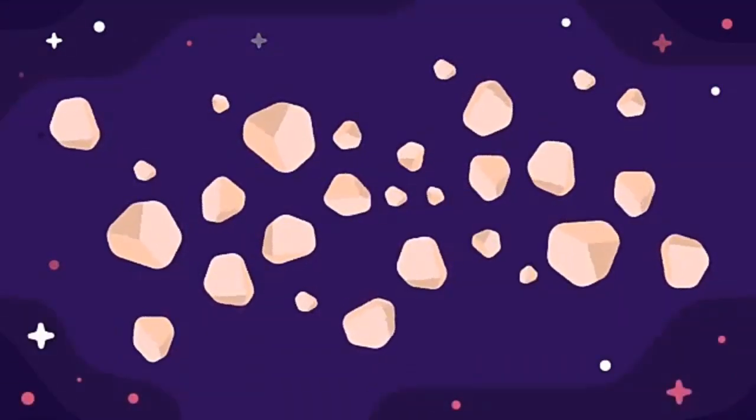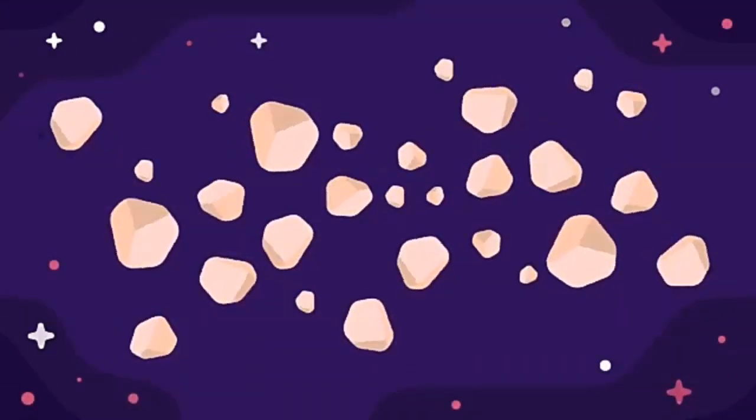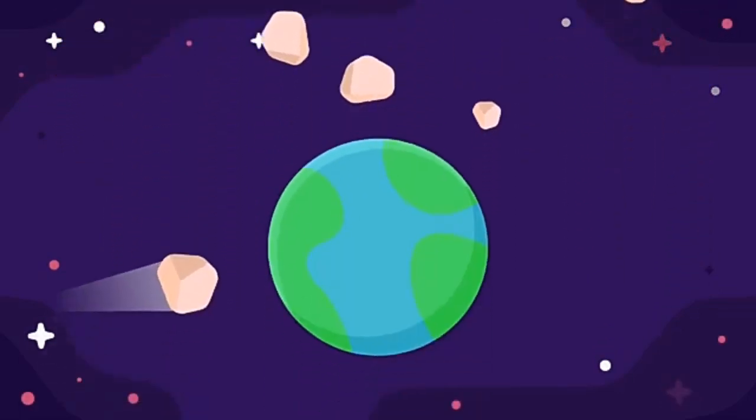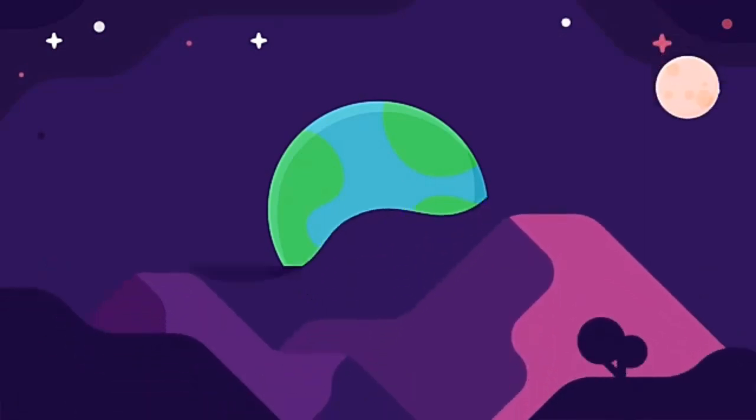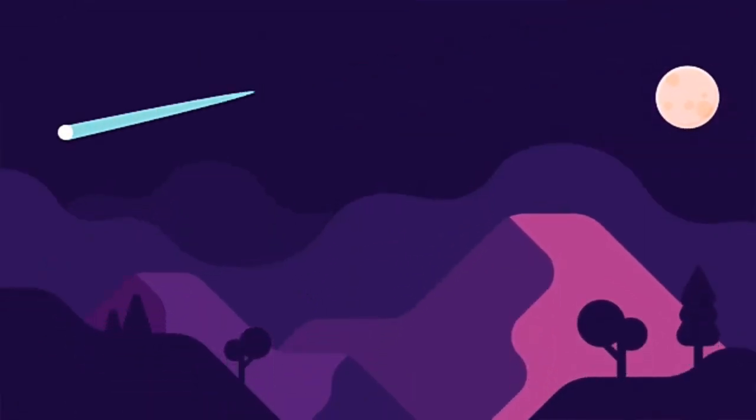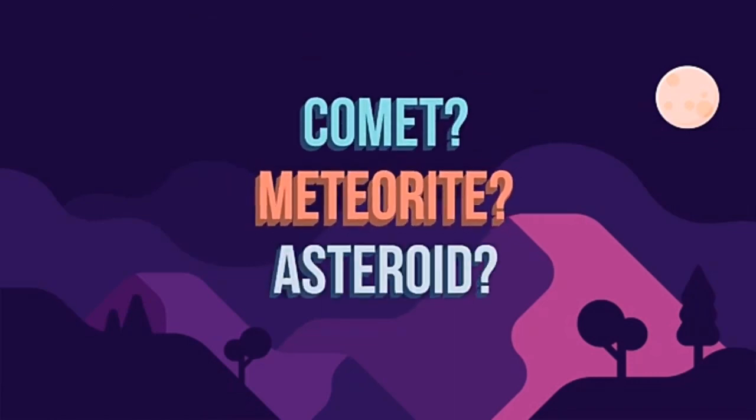There is a vast amount of rock and debris floating around in space. Around 100 tons of it actually falls to Earth every day. You might have been lucky enough to have seen this happen as a shooting star. But do you know what a shooting star is? Is it a comet? Meteorite? Maybe an asteroid?